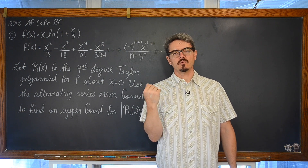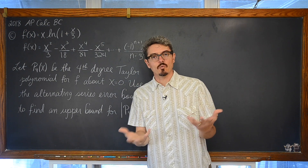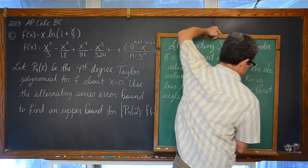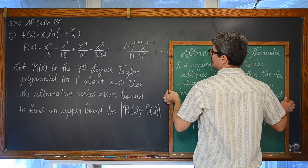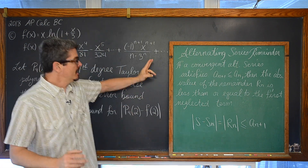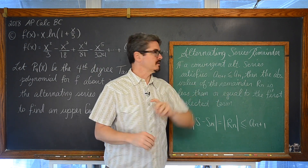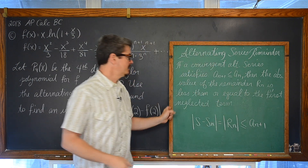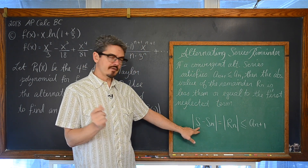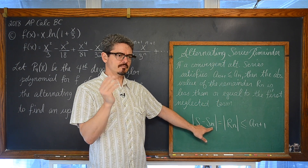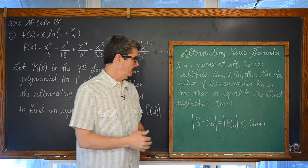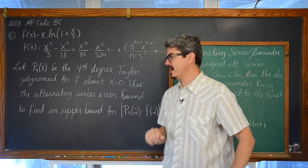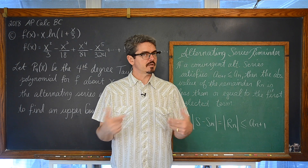We learned two types of errors when dealing with Taylor polynomials — the Lagrange form of the error, and a simpler process when the series happens to be alternating. The alternating series remainder states: if a convergent alternating series satisfies the condition where a_(n+1) is less than or equal to a_n, then the absolute value of the remainder R_n is less than or equal to the first neglected term, a_(n+1).